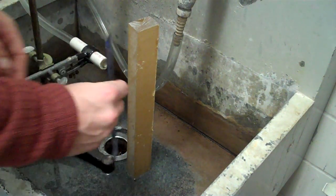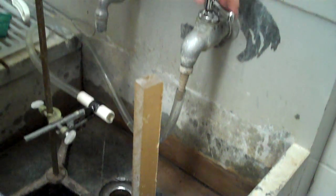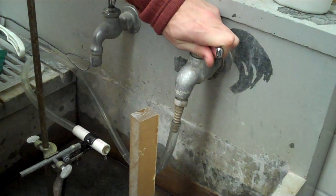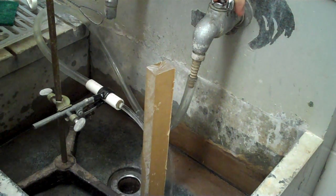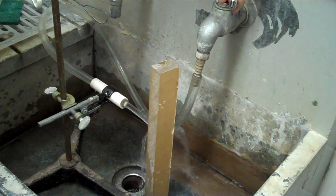You will then slowly turn the faucet on and increase the flow rate until it tips over the block.